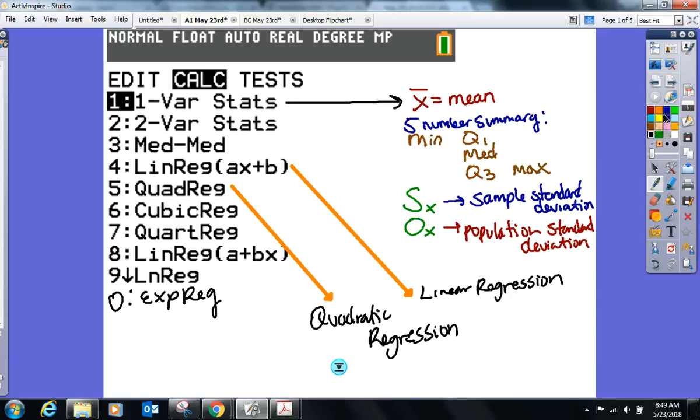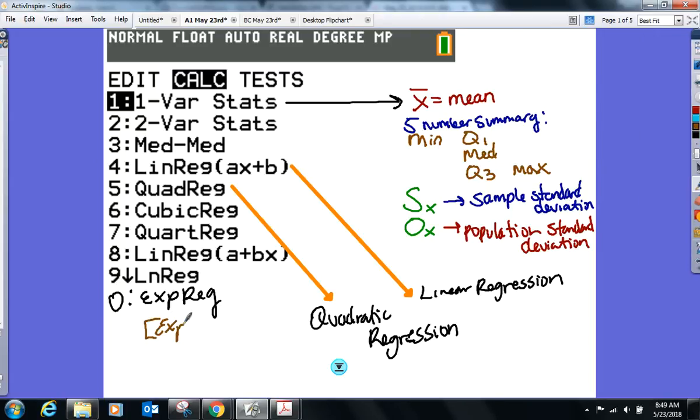And there's also zero EXP regression. And that's for, if I ask you tomorrow, which I probably will, for an exponential regression. All from the calculator. And that's it for that screen.